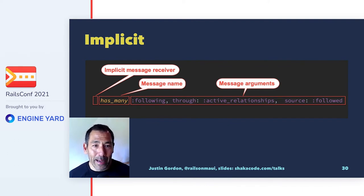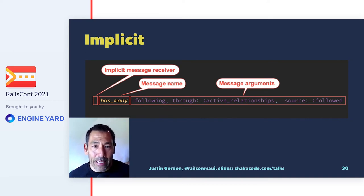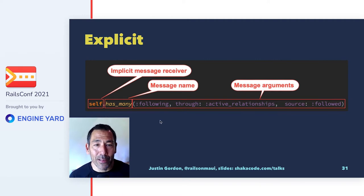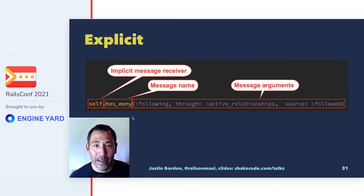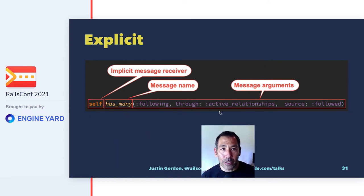Going from implicit to explicit is really the main part of this talk. There's an implicit message receiver in front of `has_many`, then there are message arguments, and the message name is `has_many` — receiver, message name, and message arguments. That is the nature of having a DSL built on top of Ruby. When you understand that, you can look at this line of code and see it explicitly: `self.has_many(:microposts)`. The implicit receiver `self` is almost never written out explicitly; it's usually there implicitly. But inside the parentheses you have the message arguments — now it's crystal clear.